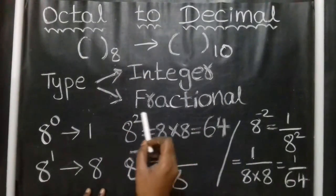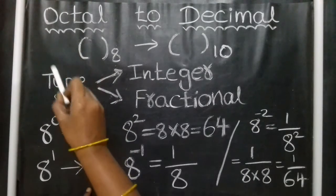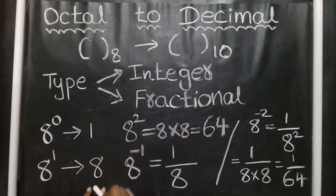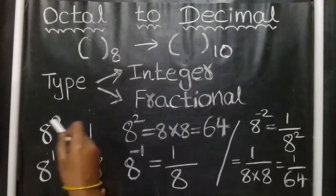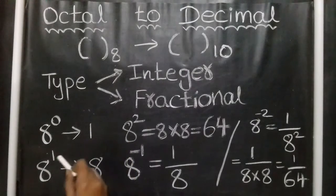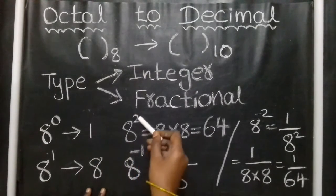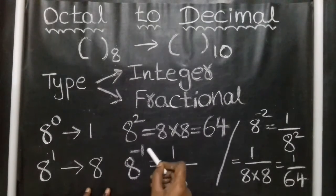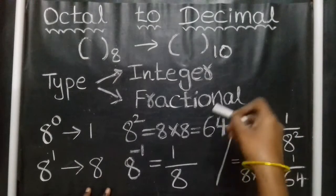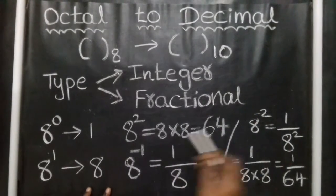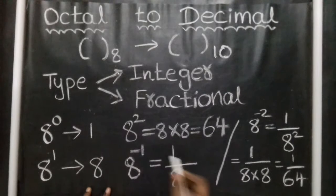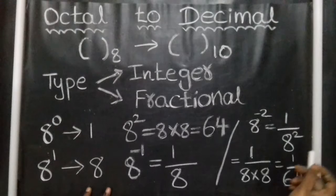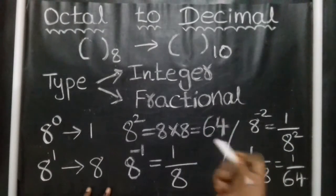In the octal to decimal conversion, each digit in the octal number is multiplied with powers of 8. The powers of 8 are: 8 raised to the power 0 equals 1 (anything raised to the power 0 is 1), 8 raised to the power 1 is 8, 8 squared is 64. For negative powers: 8 to the power minus 1 is 1/8, 8 to the power minus 2 is 1/64, 8 to the power minus 3 is 1/512.